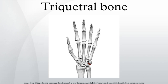The volar surface presents, on its medial part, an oval facet for articulation with the pisiform. Its lateral part is rough for ligamentous attachment. The lateral surface, the base of the pyramid, is marked by a flat, quadrilateral facet for articulation with the lunate.